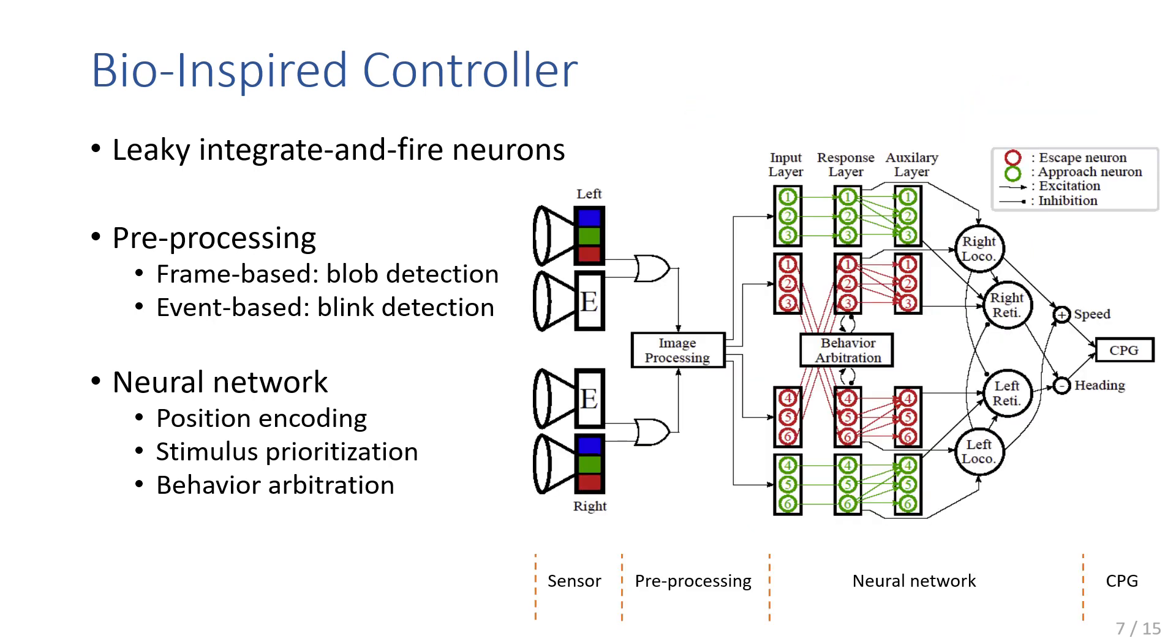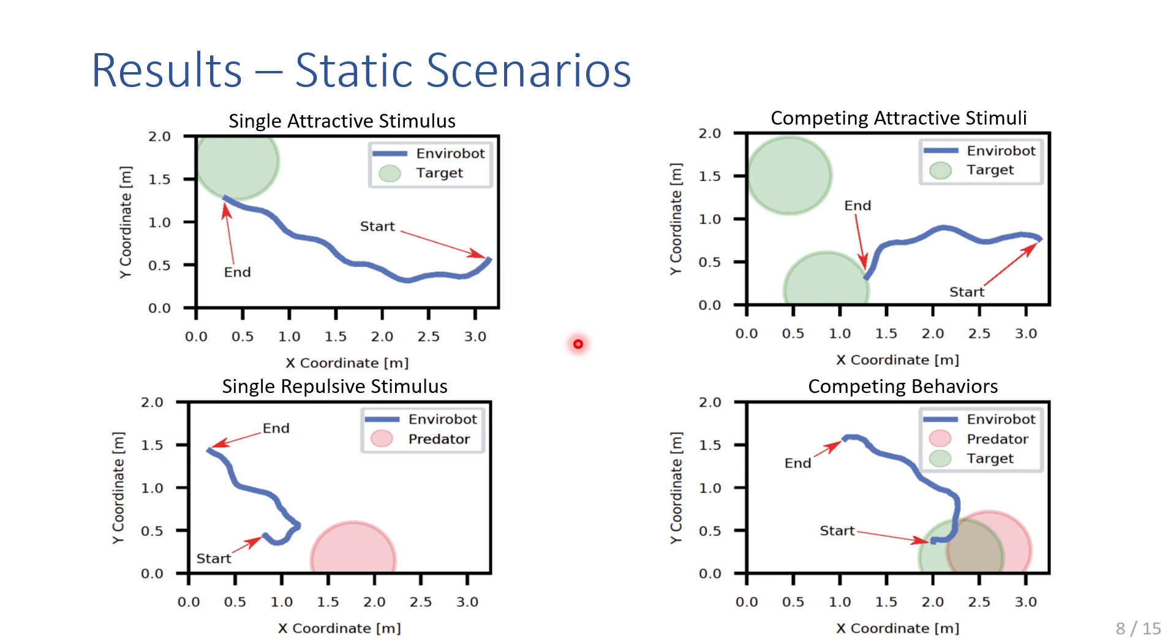At the lowest level of the neural network, neurons were implemented according to the leaky integrate-and-fire model. The connection scheme directs the robot's actions in response to various stimuli. The controller allows the robot to prioritize between multiple stimuli of the same type while resolving conflicts between competing stimuli. For example, if shown a prey and predator in close proximity, the behavior arbitration subnetwork resolves this conflict by directing the robot to escape. We were quite happy to see that this control strategy performed as expected with the Envirobot, aligning well with results of simulations published in previous research.